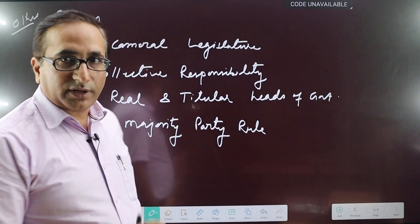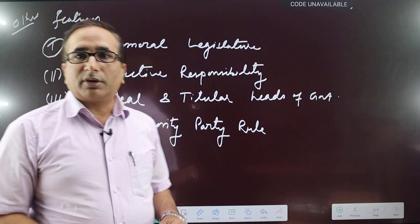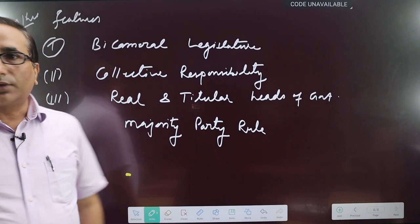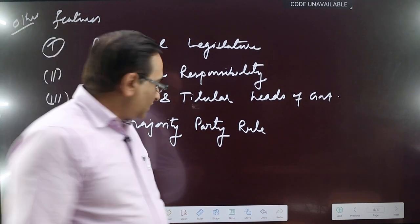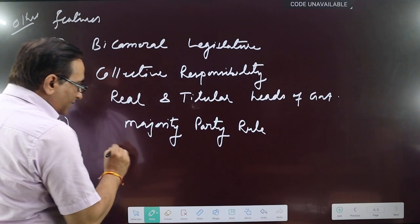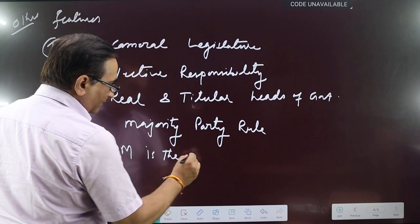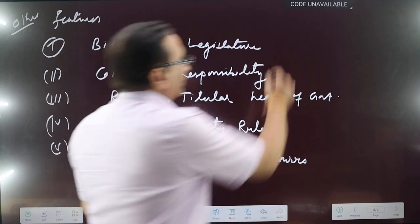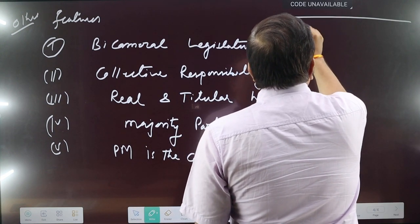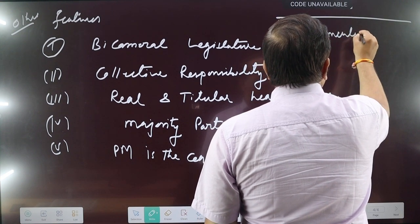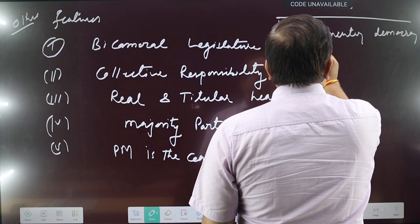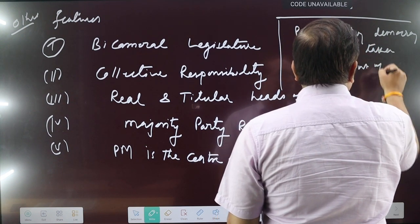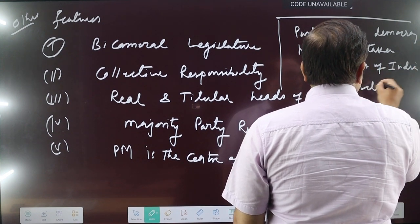Majority party rule: if a single party enjoys majority in the lower house of the legislature then it will form the government, if not then there will be a coalition. Another feature, already discussed, is that the Prime Minister is the center of all powers. One important fact to remember: Parliamentary Democracy has been taken from the Government of India Act 1935.